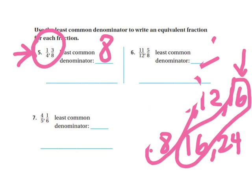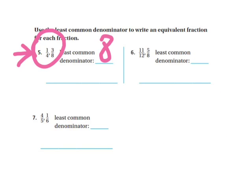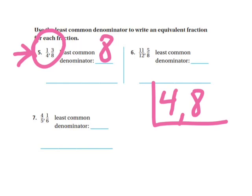Now I'm going to show you the ladder method of finding the same answer. What I just showed you is the multiples method. With the ladder method, you take your two denominators and put a little bracket around them, then you look and see what can I divide both of these by. I can divide 4 and 8 by 4. I can see they're both divisible by 4, so I divide them by 4. 4 divided by 4 is 1, and 8 divided by 4 is 2, so I put a 2 here, and then put another bracket.